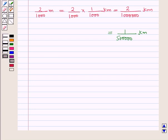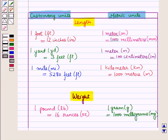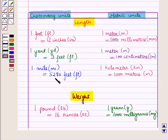So we have learnt conversion of units for length. Now let us see the units of length in both systems. In the customary system: 1 foot = 12 inches, 1 yard = 3 feet, 1 mile = 5,280 feet. In the metric system: 1 meter = 1,000 millimeters, 1 meter = 100 centimeters, 1 kilometer = 1,000 meters.